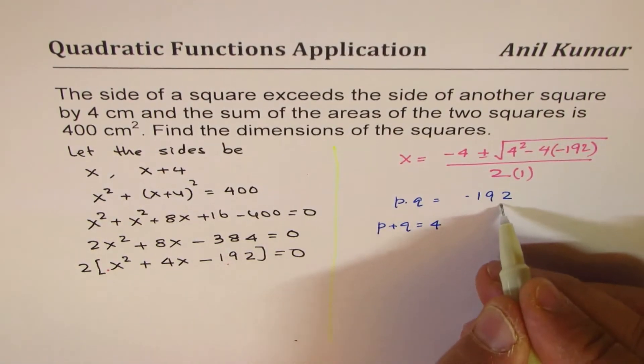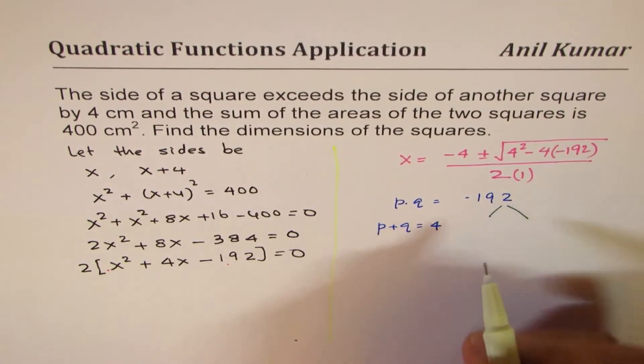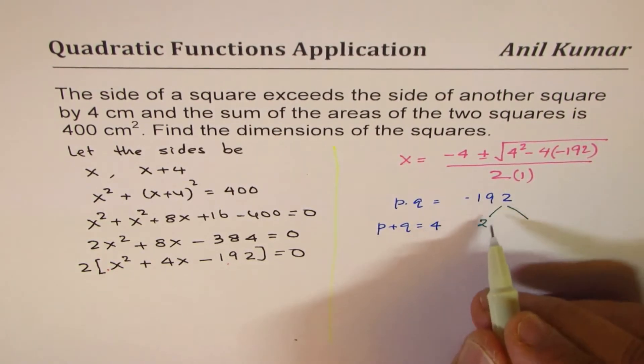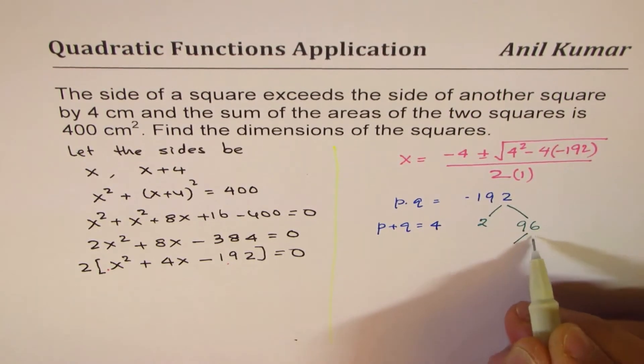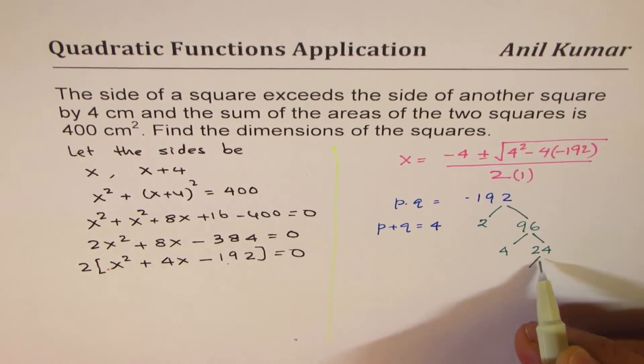How do we get these numbers? What we can do is factor 192. If I divide by 2, we get 96. So 96 we could divide by 4, so 4 times 2 is 8, and we get 24.